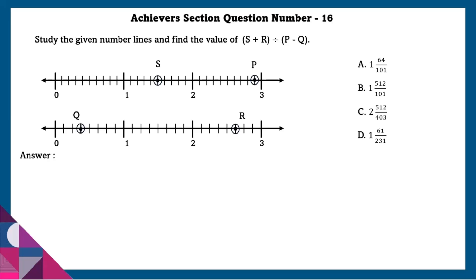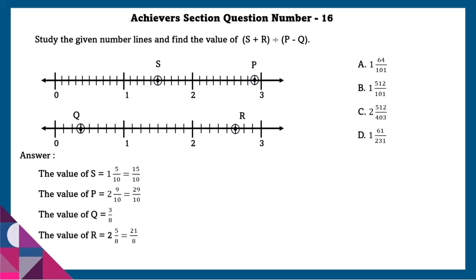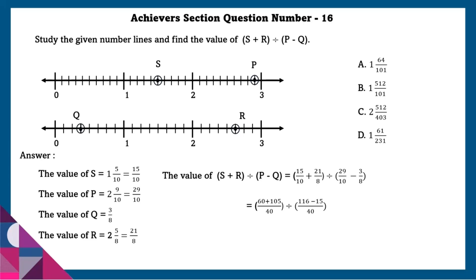Achiever section question number 16: Study the given number lines and find the value of (S plus R) divided by (P minus Q). From 0 to 1 there are 10 divisions, so S equals 1 and 5/10, as an improper fraction 15/10. P equals 2 and 9/10, as an improper fraction 29/10. In the second number line, from 0 to 1 there are 8 divisions, so Q equals 3/8 and R equals 2 and 5/8, that is 21/8. Substituting, (S plus R) divided by (P minus Q) equals 164/101.